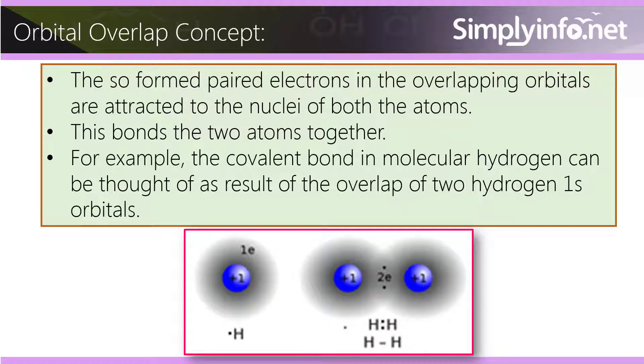For example, the covalent bond in molecular hydrogen can be thought of as the result of the overlap of two hydrogen 1s orbitals.